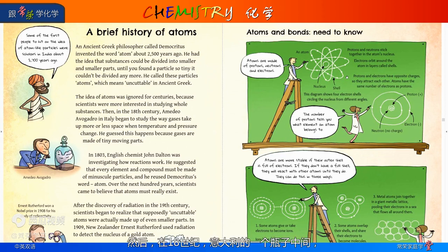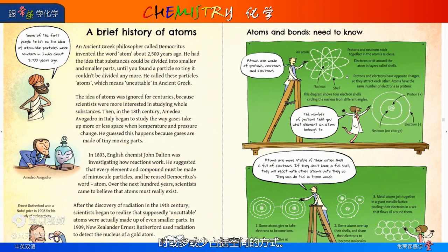Then, in the 18th century, Amedeo Avogadro in Italy began to study the way gases take up more or less space when temperature and pressure change. He guessed this happens because gases are made of tiny moving parts.